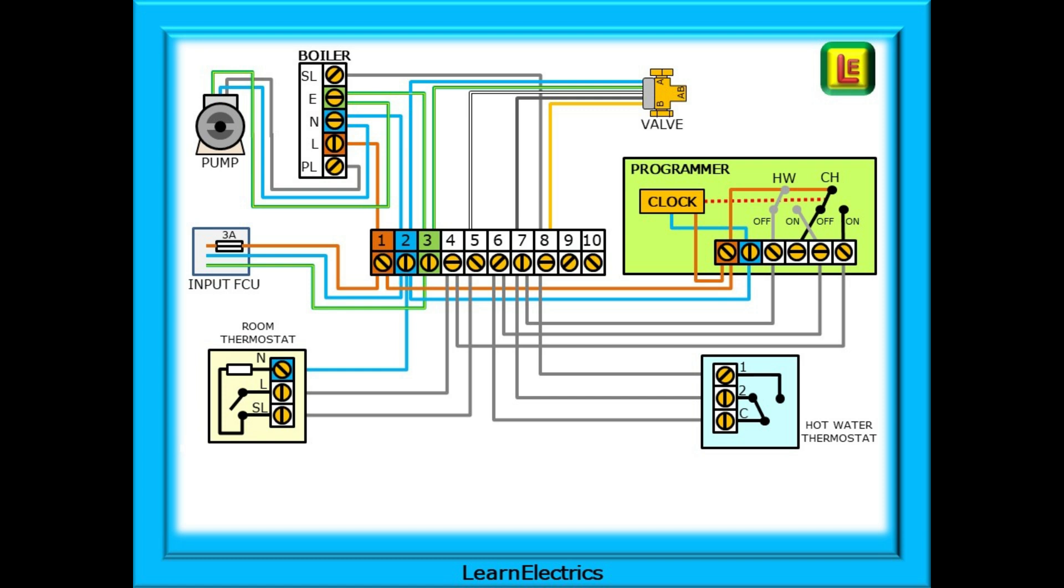We have the programmer controller that provides the changeover timing for the on and off periods. There is a room thermostat and a hot water thermostat. Boiler connections and a supply to the pump, and not forgetting the three port valve at the top that directs the flow of water around the system.